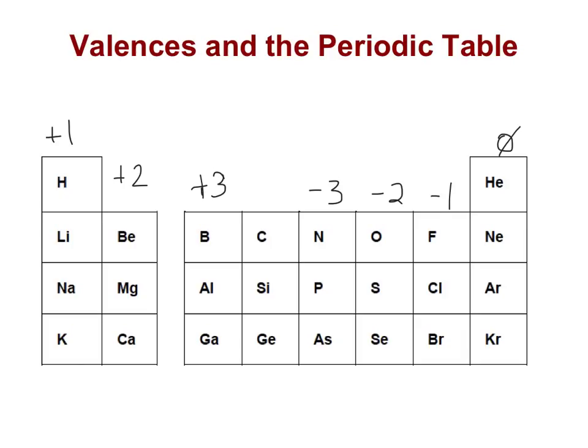In terms of our group four elements, carbon, silicon, germanium, and continuing down, they're a little special because they can have a valence of either plus four or negative four. It's going to depend on what else it's combining with.